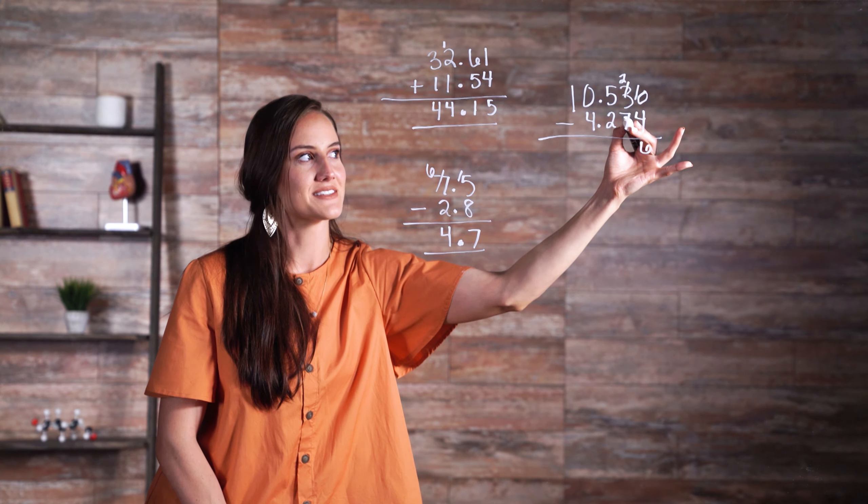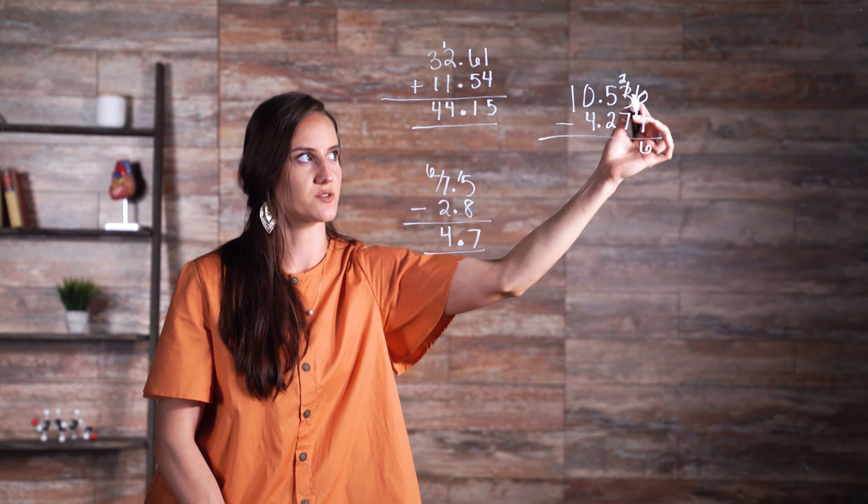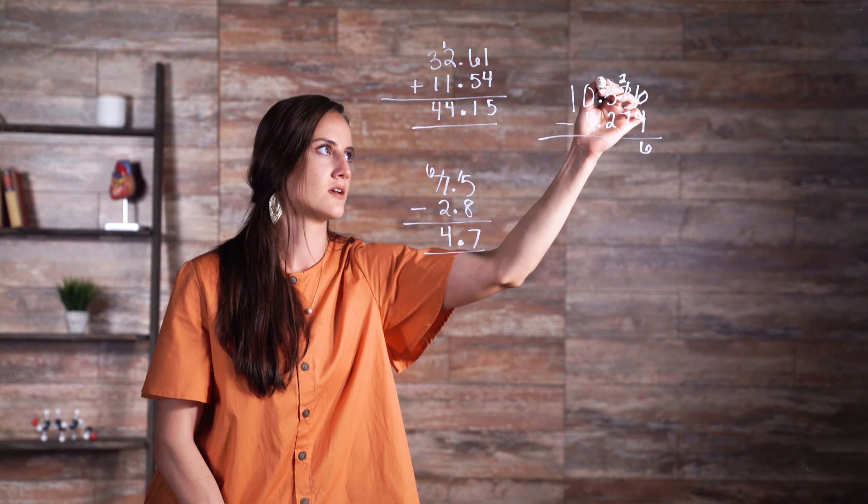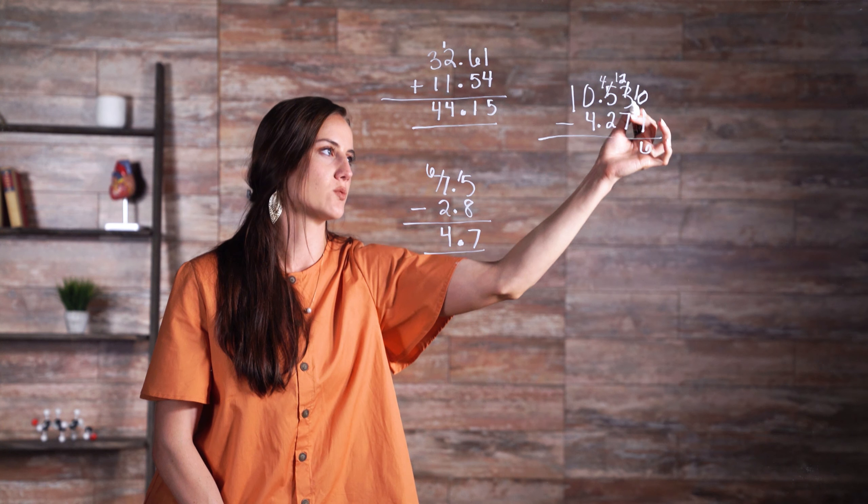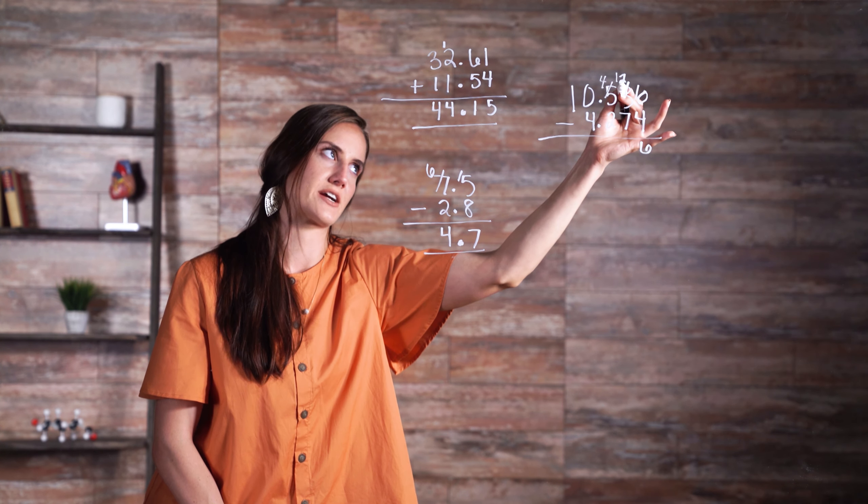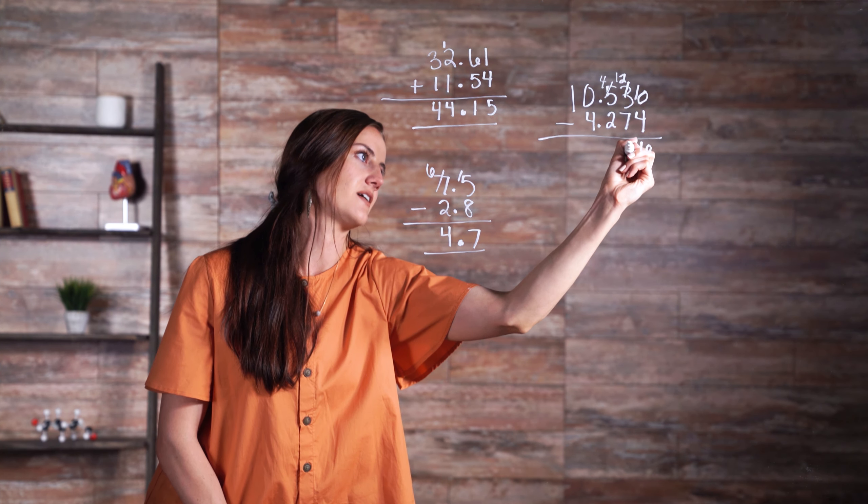Then we have 7 being subtracted from 2, which doesn't work, so we need to borrow again. This becomes 4, carry over 1 to have 12. So 7 being subtracted from 12, that gives us 5.